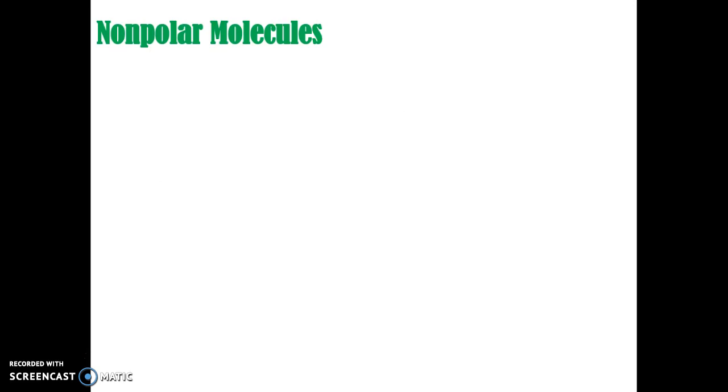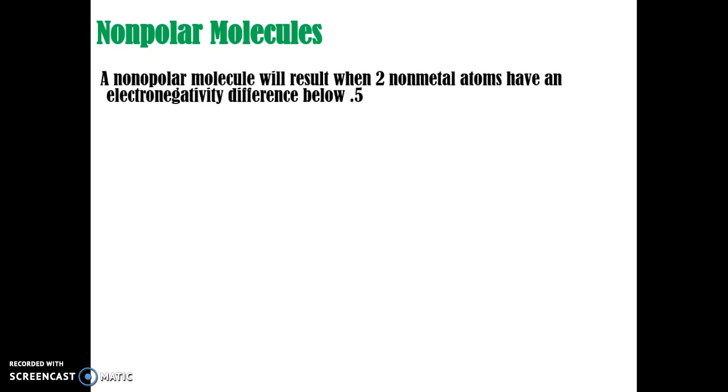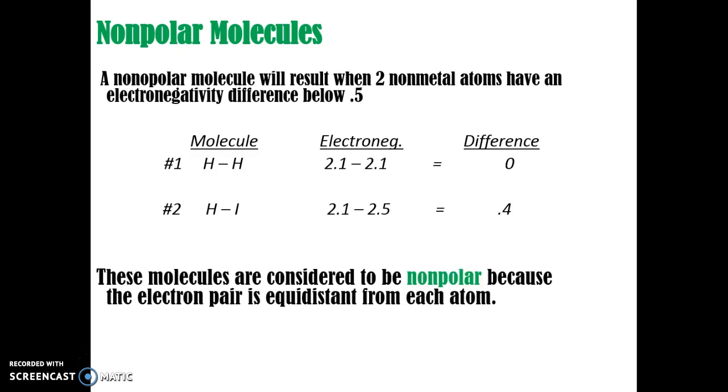So nonpolar molecules, for example. Nonpolar molecules result in two nonmetals having an electronegativity difference below 0.5. So here's one example. First example, hydrogen and hydrogen. They have the same electronegativity. So 2.1 minus 2.1 gives you 0. Pretty simple, right? Example number two is HI. A little different here. We have 2.1 and 2.5, but the difference is still 0.4. So HI, hydroiodic acid, is actually not a very polar acid at all. So these molecules are considered to be nonpolar because we can see the electron pair do not have great distances.